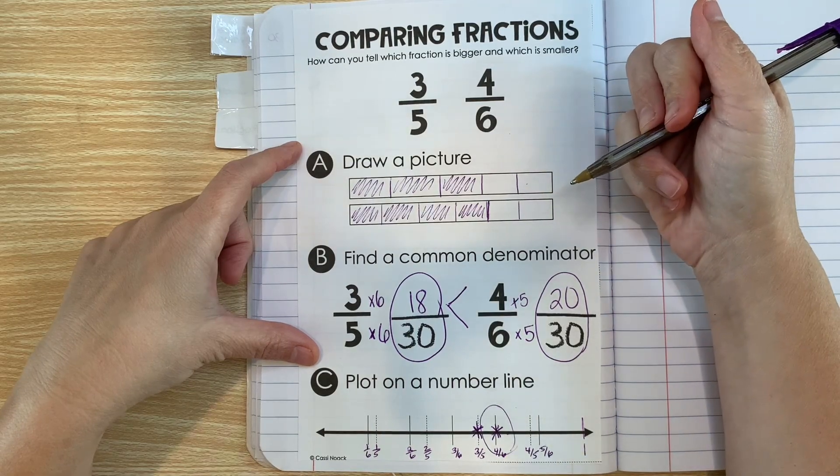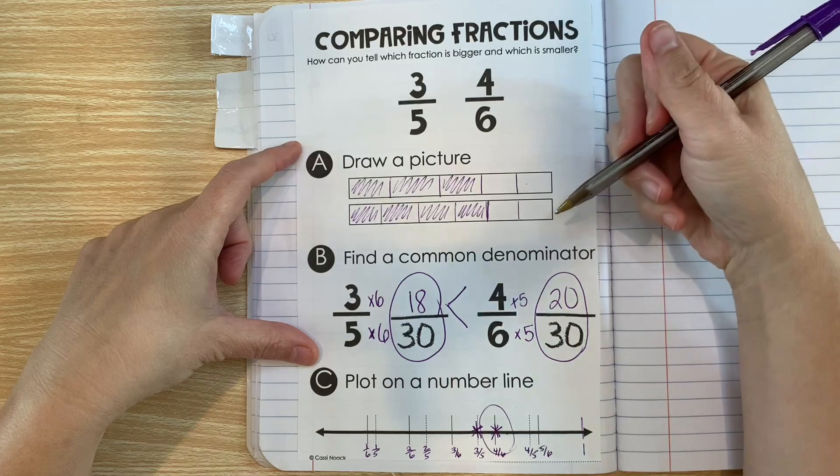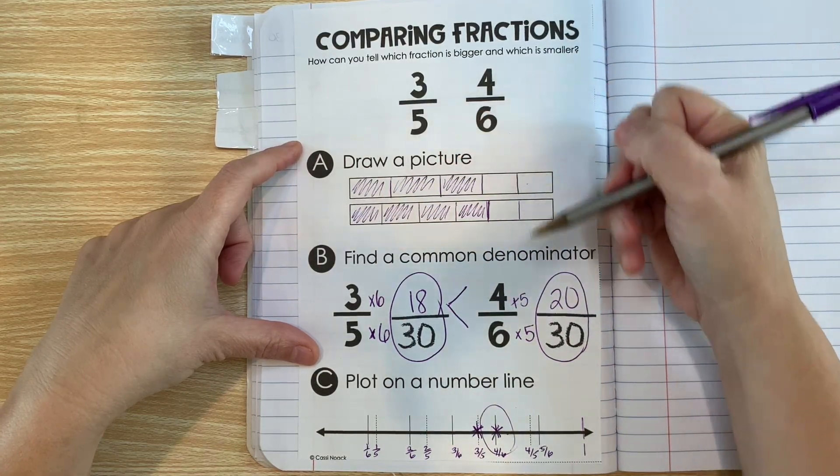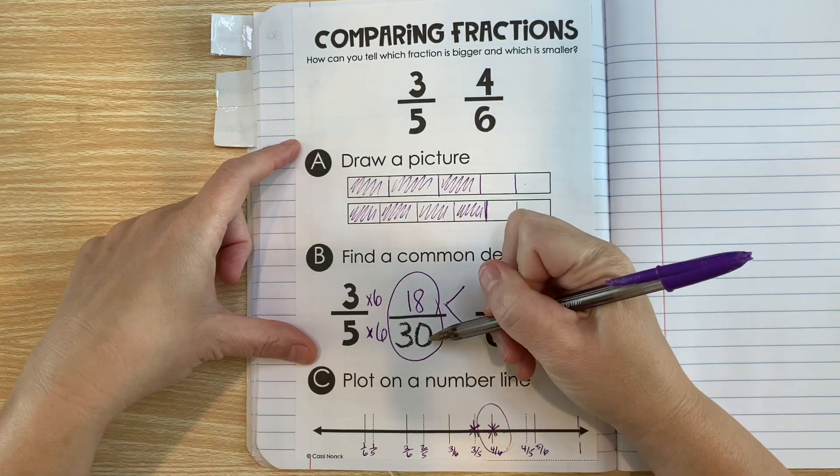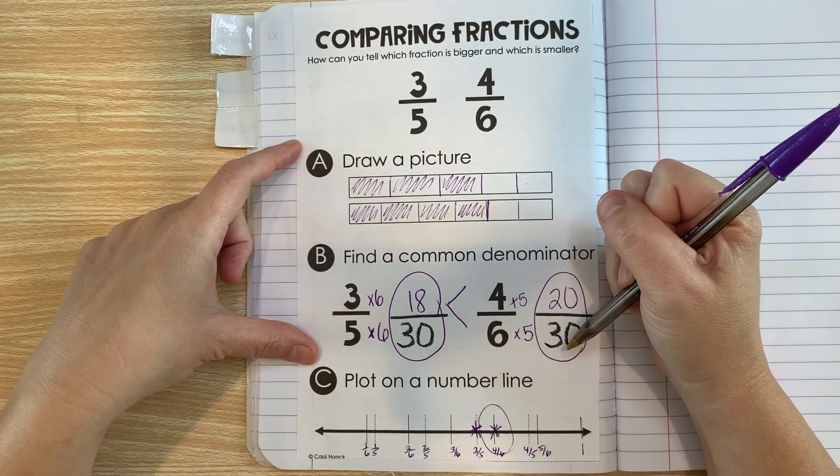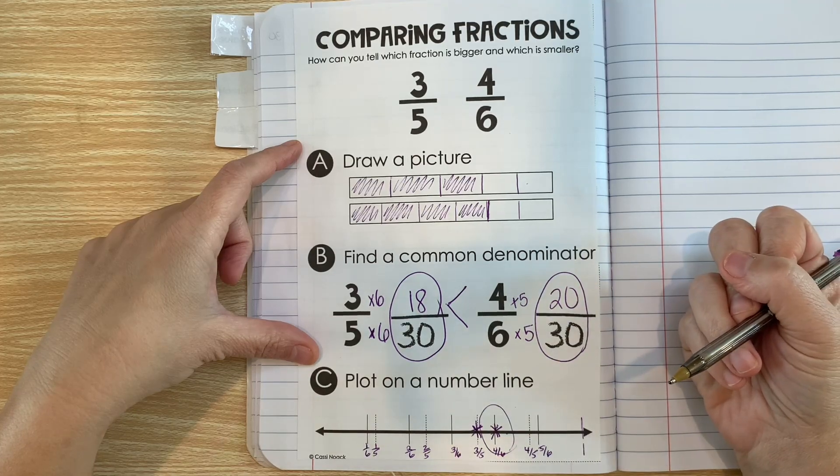So this is another strategy. As you're doing your work and you have to compare fractions, remember there are three different ways you can do it, and you can figure out which way is your favorite. You can draw a picture—just be really careful that you get your parts the same. You can find a common denominator, either a harder equivalent fraction or a simpler equivalent fraction. Or you can make two number lines and see where they fall on the number lines.